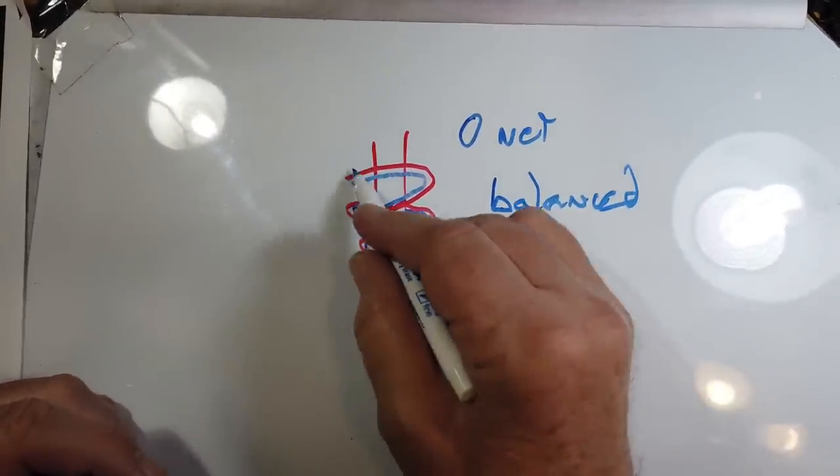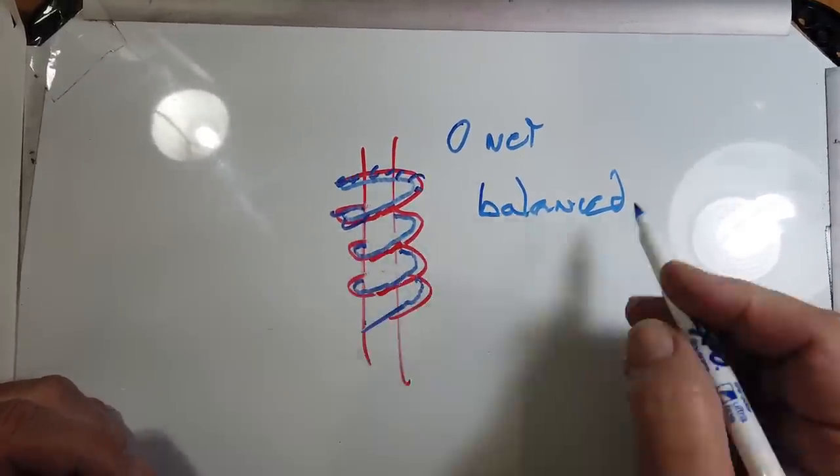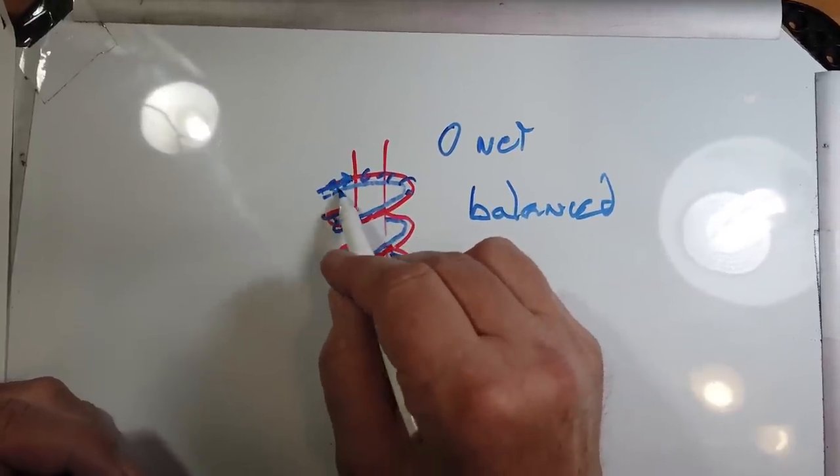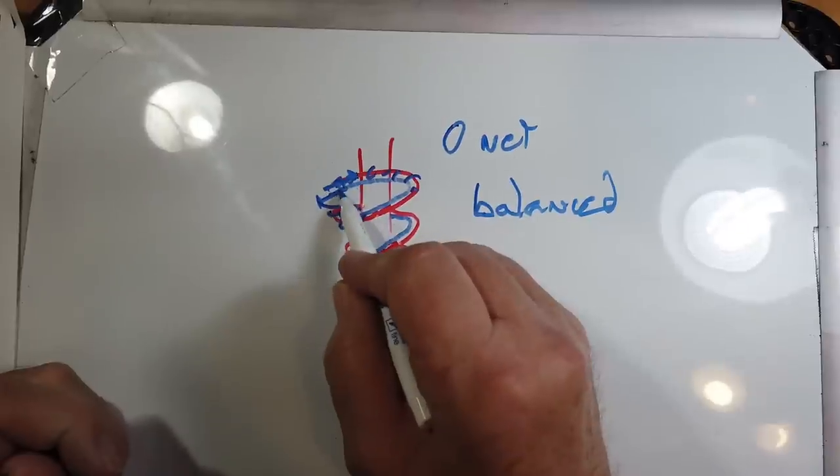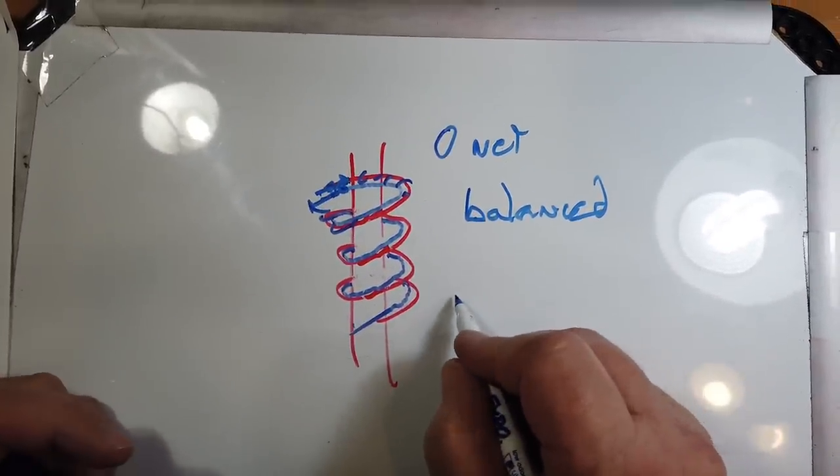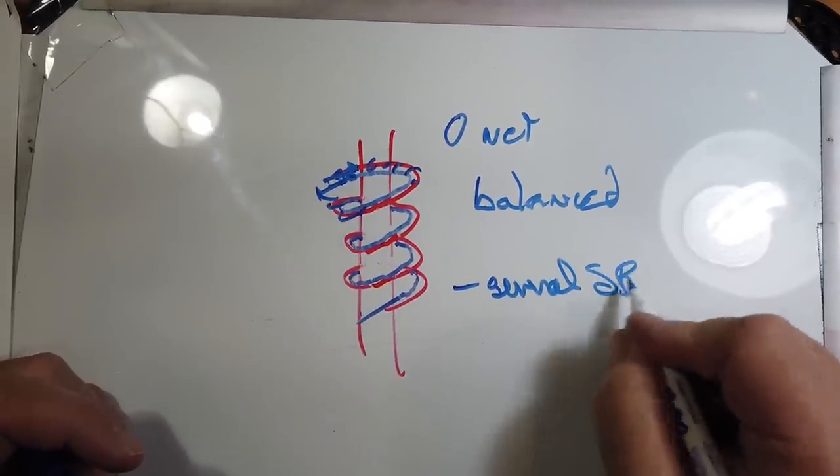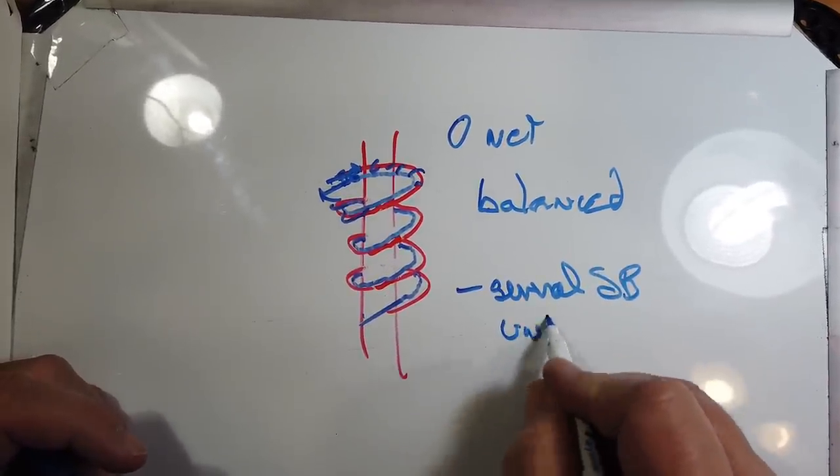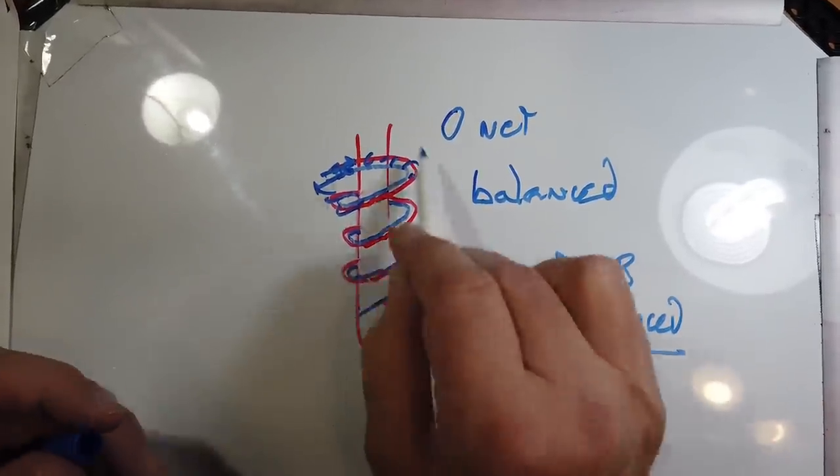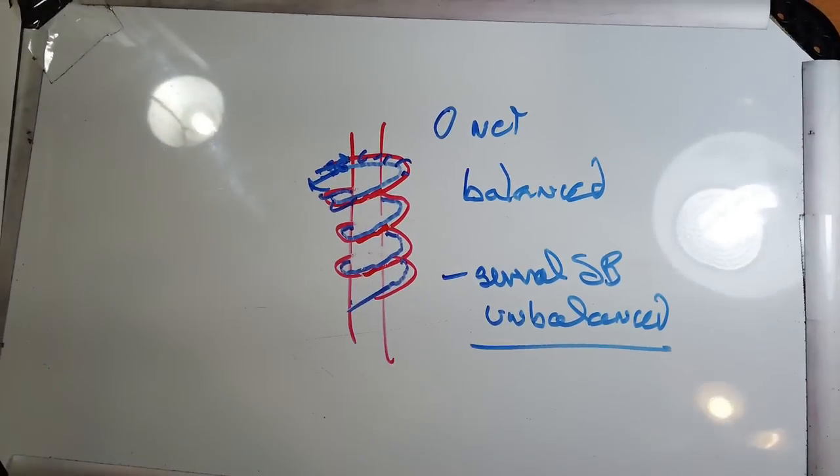Now, for the unbalanced or common mode current that comes down on both of them, normally the currents here, you've got current in, same time you've got current out. If you have a current in on both sides, this will cause it to be several dB for unbalanced, and this is a great way to get rid of RF on the line. It's not the only way, but it is a great way.